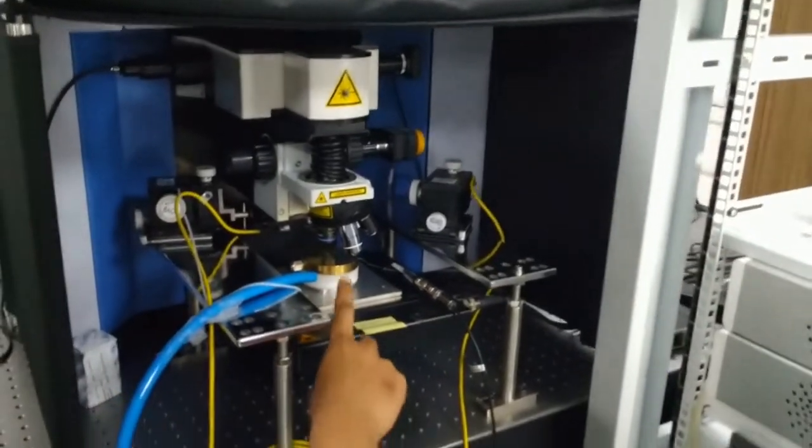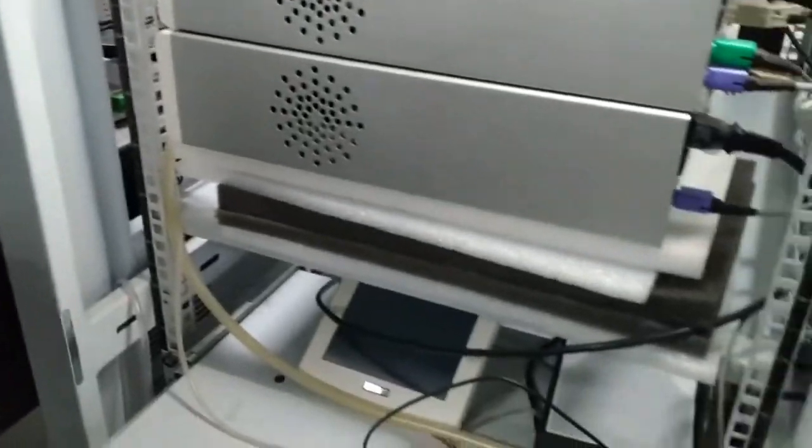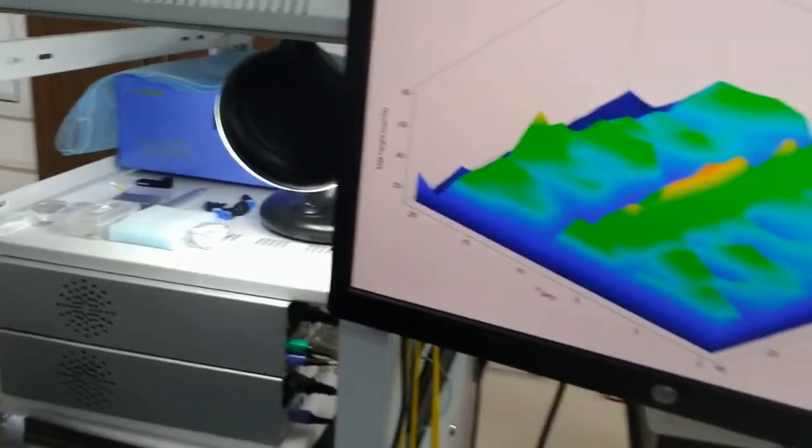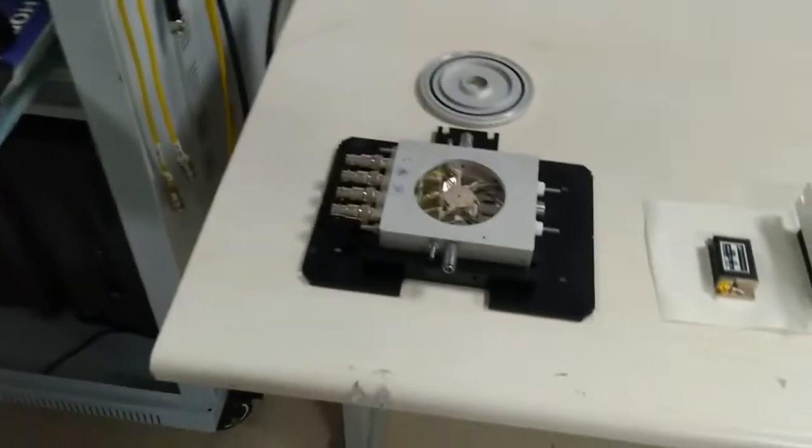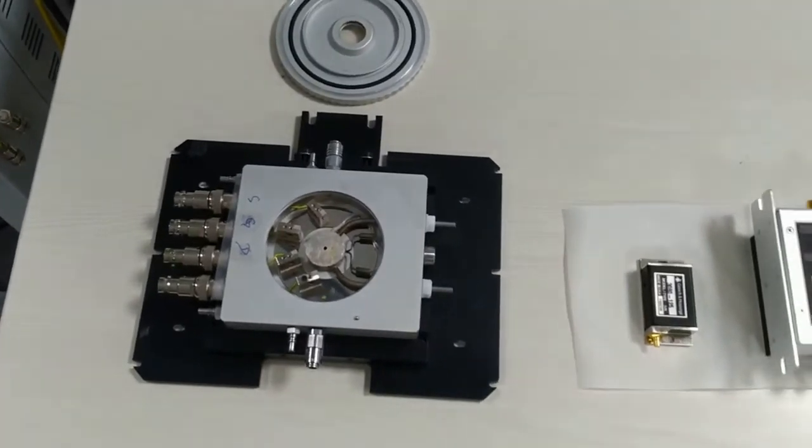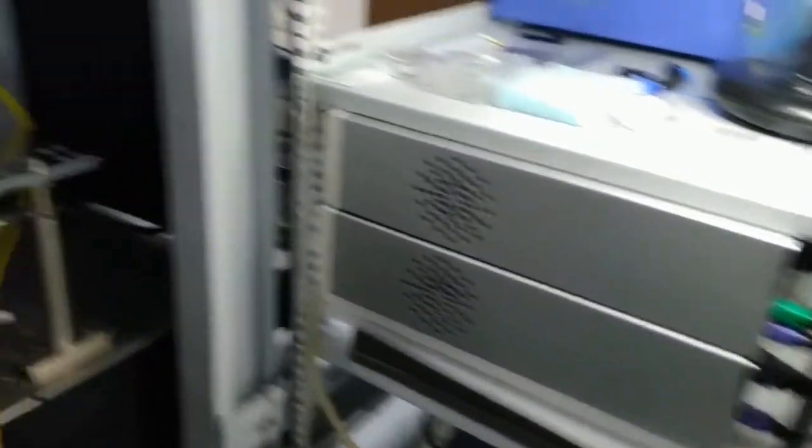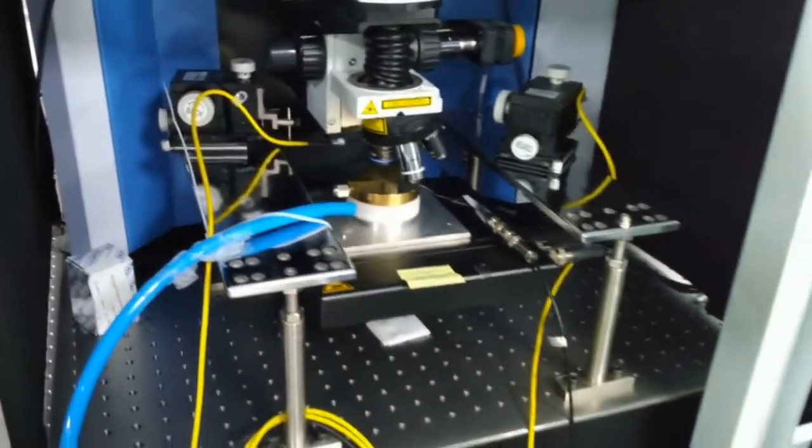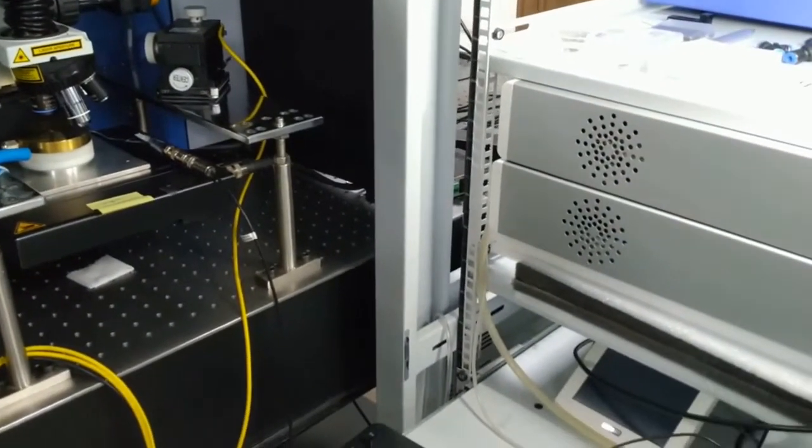We have a software controlled motorized stage which helps us in generating Raman, photoluminescence and electroluminescence maps in the devices during stress. We also have a Linkam stage which we can use to control temperatures from liquid nitrogen temperature, 77 Kelvin, to temperatures as high as 600 Kelvin. We can also integrate the cryostat with this Raman setup to study signals at temperatures as low as liquid helium temperature, 4 Kelvin.